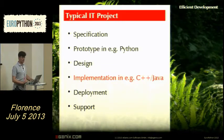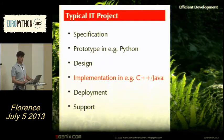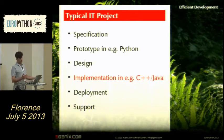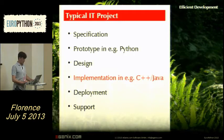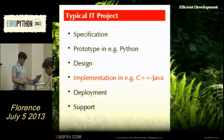What's a typical IT project? You normally get a specification from the customer which basically describes all the things you have to do. Then you write a prototype — we do that in Python — then you come up with a design, then you take the prototype and convert it into a real-life language like C++ or Java, and then you have deployment and support. That's the standard kind of IT project.